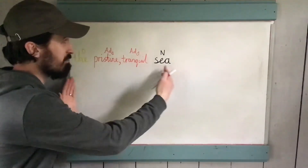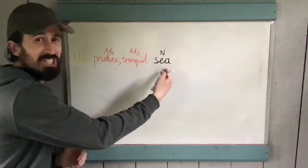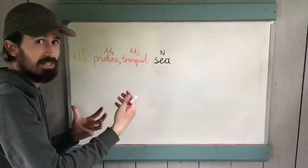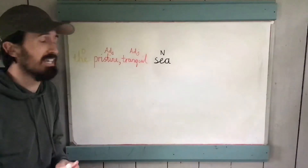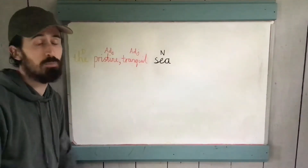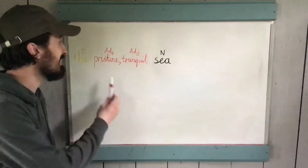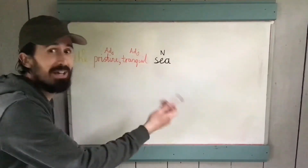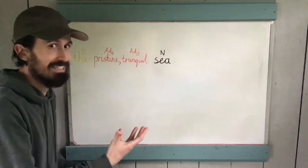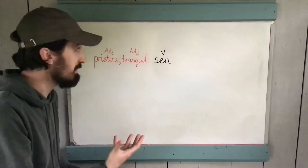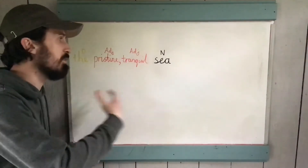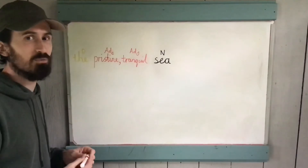Remember, we now have more than just a noun — we've got a noun phrase, but we've really expanded it out. If we were doing a piece of descriptive writing or persuasive writing, this is so much better straight away than just describing it as 'sea' or 'the sea.' 'The pristine, tranquil sea' — we've got a good expanded noun phrase so far.